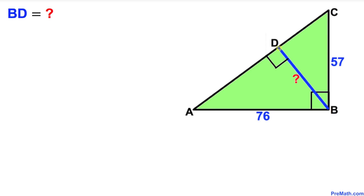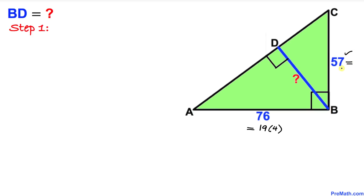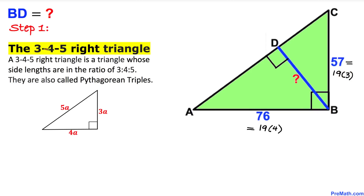We are going to find the length of line segment BD. In our very first step, let's focus on the number 76, which can be written as 19 times 4. Now let's focus on the number 57, which can be written as 19 times 3. Therefore, according to the 3-4-5 right triangle postulate: